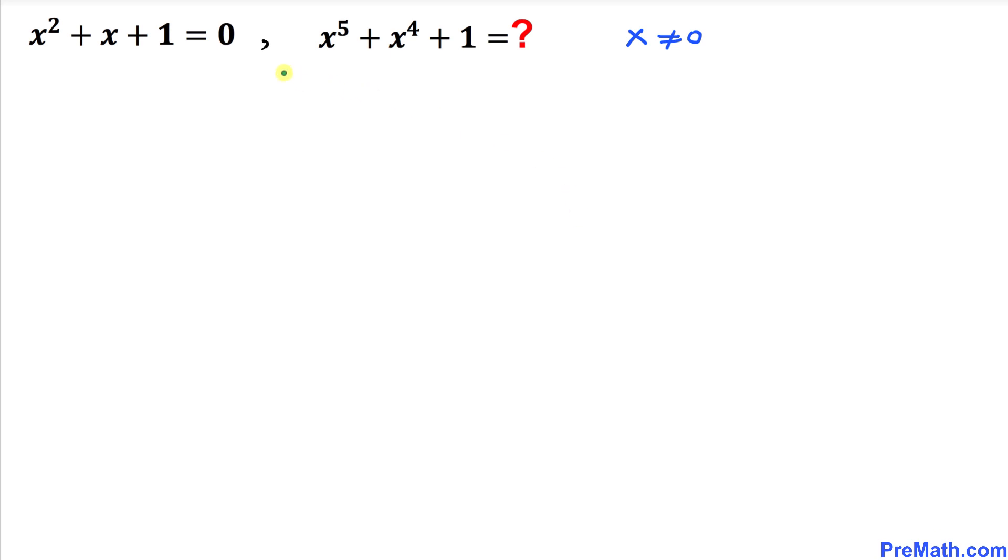Welcome to PreMath. In this video we have this conditional statement: if x² + x + 1 = 0, then we are going to find the value of x⁵ + x⁴ + 1, and make sure that x is not equal to 0.